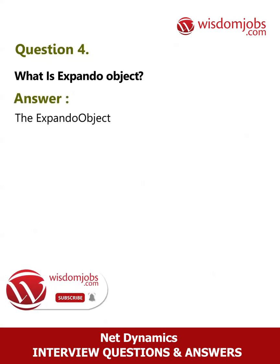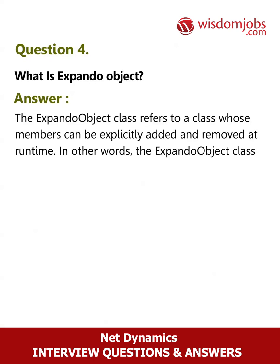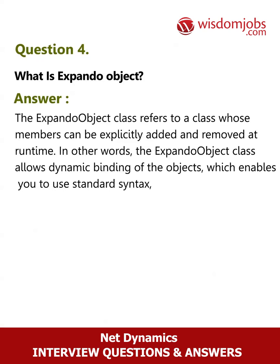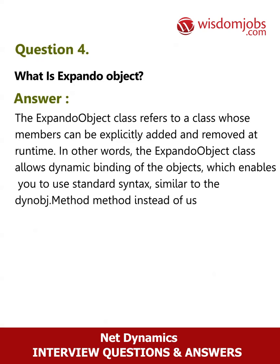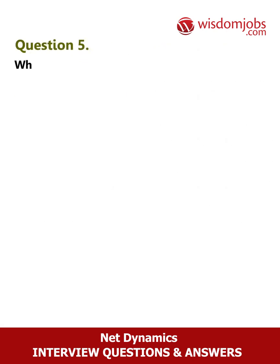Question 4: What is ExpandoObject? Answer: The ExpandoObject class refers to a class whose members can be explicitly added and removed at runtime. In other words, the ExpandoObject class allows dynamic binding of objects, which enables you to use standard syntax similar to the DynamicObject method instead of using more complex syntax such as the DynamicObject GetAttribute method.